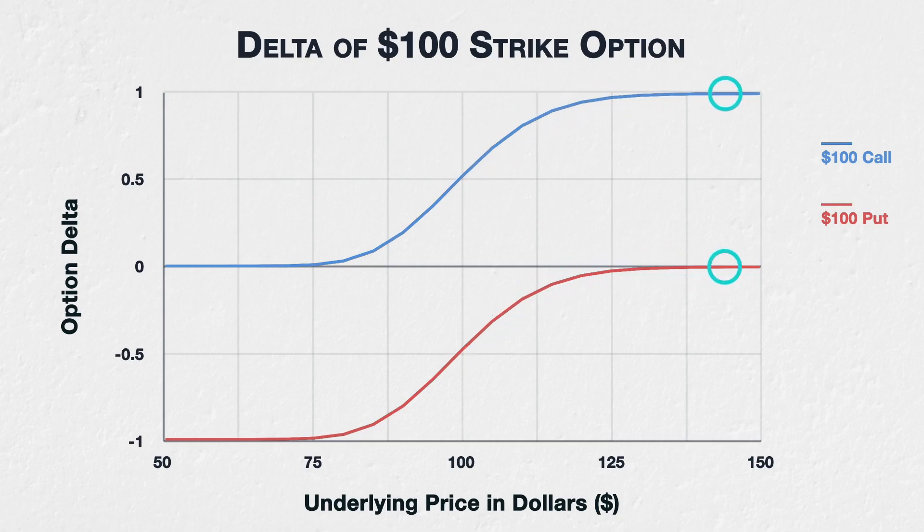Moving on to the extreme right of the chart, to an underlying price of $150, the $100 call option is now deep in the money, and so its delta has increased to nearly 1. It will now behave very similarly to a long position in the underlying, increasing in value by roughly $1 for every $1 increase in the underlying price. The $100 put, on the other hand, is now far out of the money, and so its delta is now close to 0, with underlying price movements barely affecting its value — the $100 put is almost worthless, and a $1 increase to $151 will not change this much, so the delta is very close to 0.